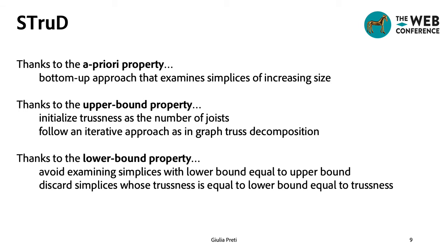So, thanks to the a priori property, we can adopt a bottom-up approach that examines simplices of increasing size and discard those with trussness zero, and hence prune the search space.